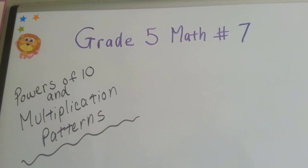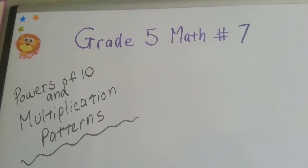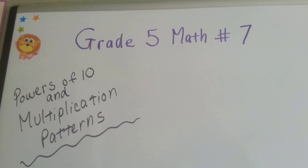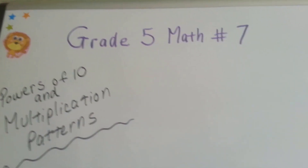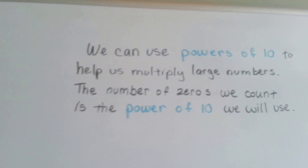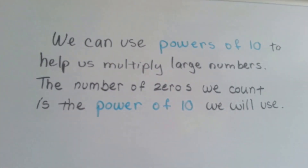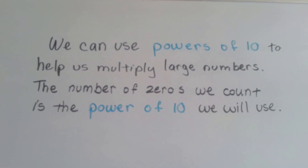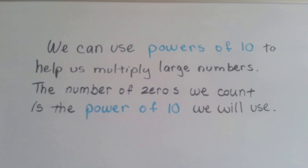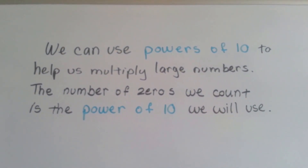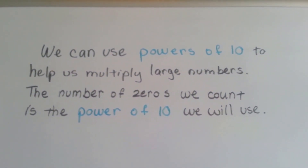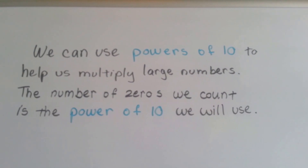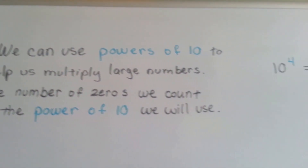Grade 5 math, number 7: powers of 10 and multiplication patterns. We can use powers of 10 to help us multiply large numbers. The number of zeros we count is the power of 10 we will use.